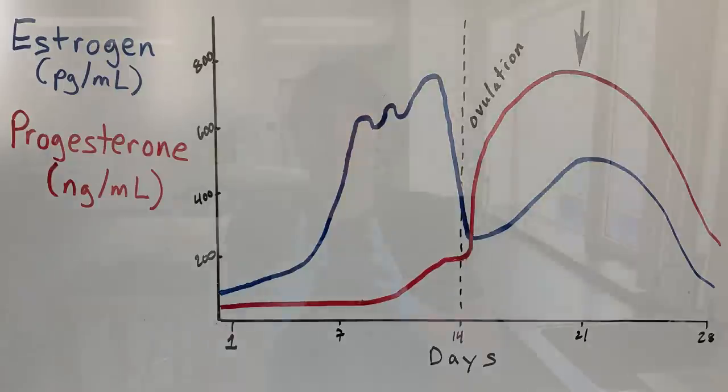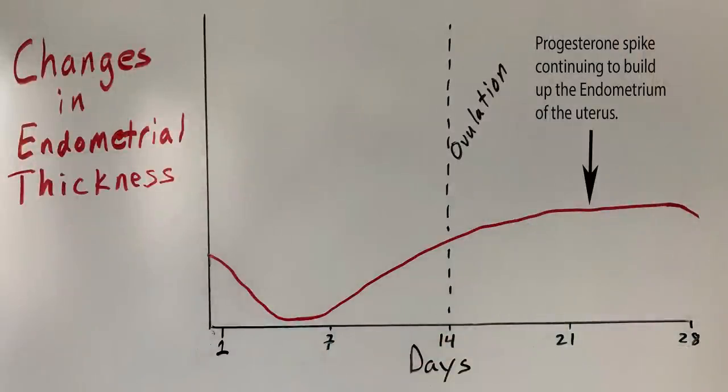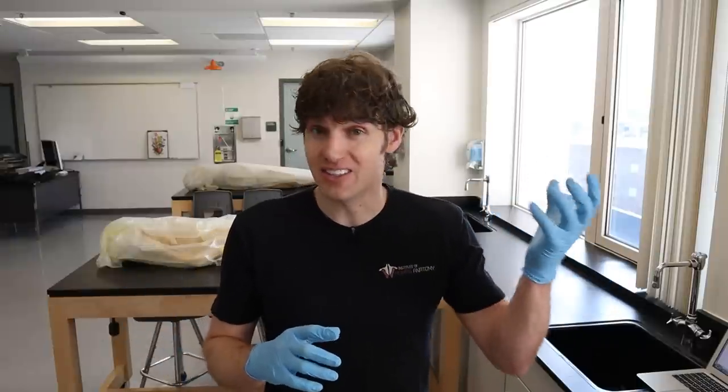Progesterone is very important for continuing to build up the lining of the uterus. This makes sense — we just ovulated and might fertilize that egg, so let's make sure the uterus is primed and ready to receive it and implant into the uterine wall, which we call the endometrium. To wrap up the whole female reproductive cycle, we need to identify two potential scenarios: the egg does not get fertilized, or the egg does get fertilized.